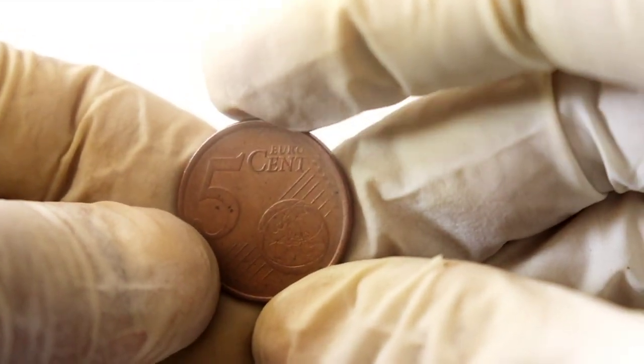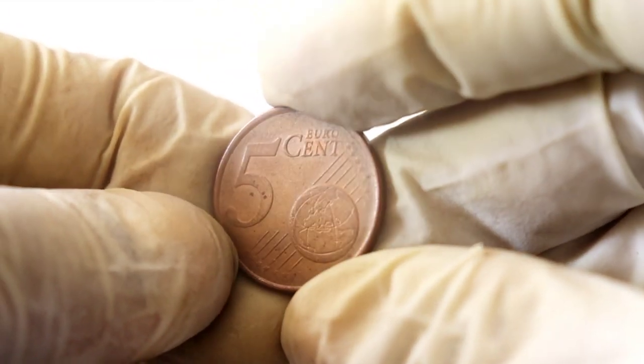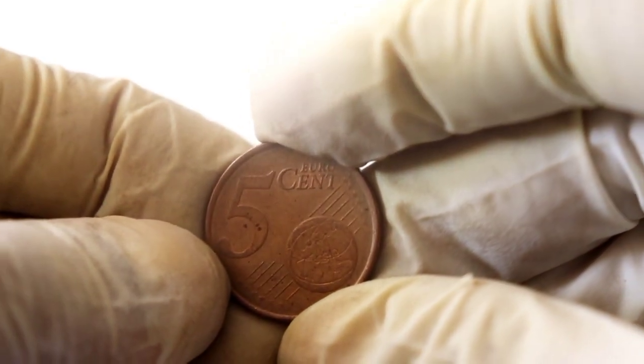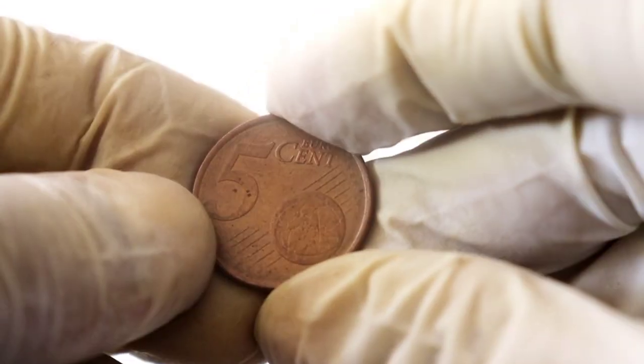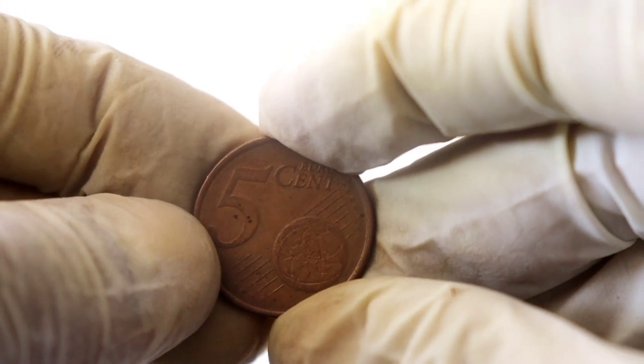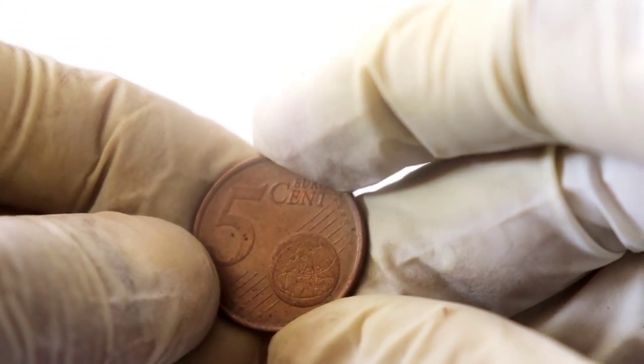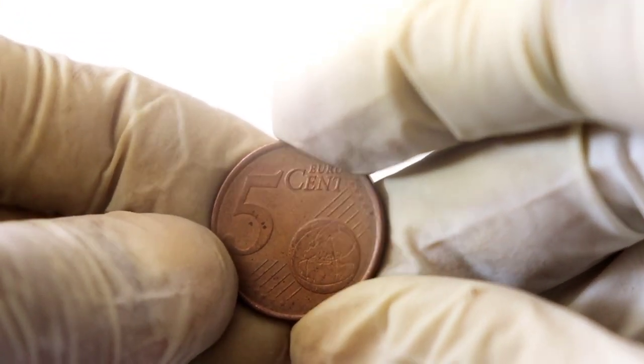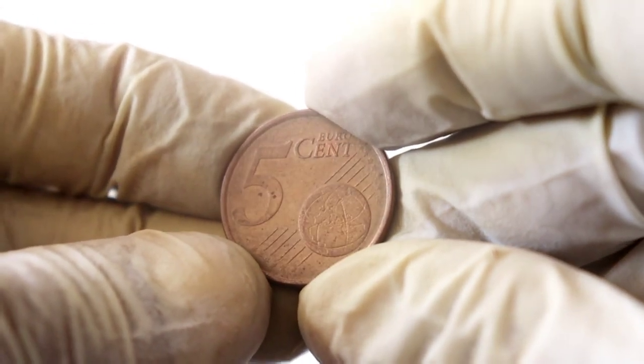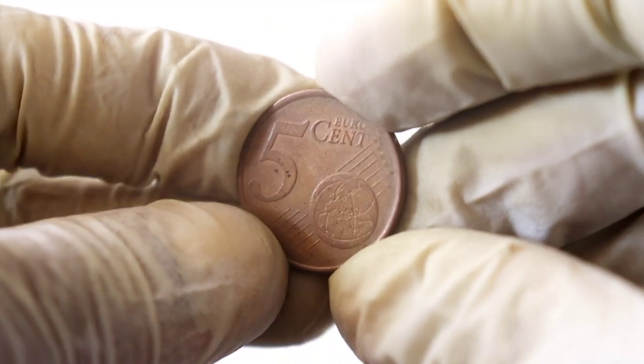There you have it, fellow numismatists. The 5 Eurocent 2002 coin is more than just a mere piece of currency. It's a treasure trove of history, beauty, and value. So, the next time you come across this coin in your pocket change or coin collection, take a closer look. You might just be holding a small fortune in your hands.